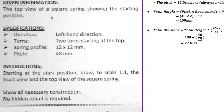This one is different from the previous exercise because the height isn't given — you have to calculate it. Going back, the pitch is 48. Pitch is the distance that a locus point will move up or sideways as it rotates around once. The pitch is always equal to 12 divisions.